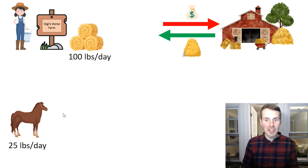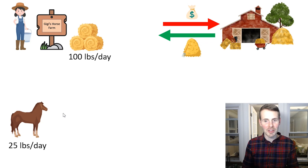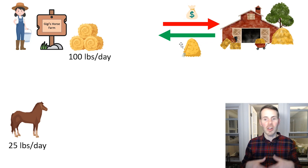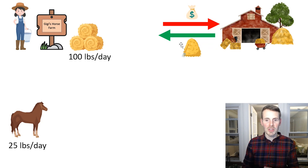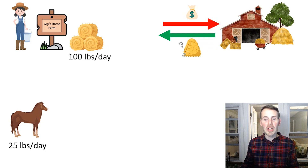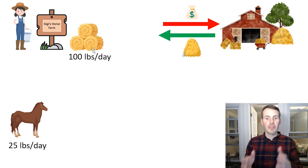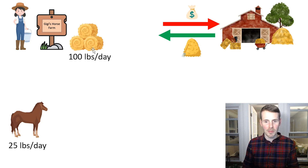So what does Gigi do? She buys hay from the hay farm down the street. As you can see here, she pays money to the hay farm in return for hay. They have a contract that they put in place. The hay farm says that for this amount of money, they can make sure that she has 100 pounds of hay at her farm each and every day.